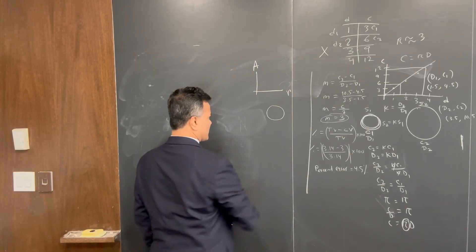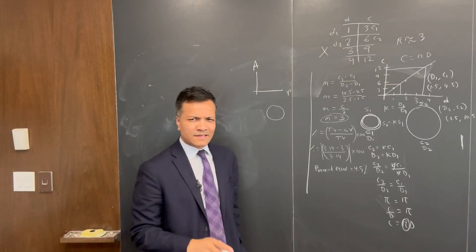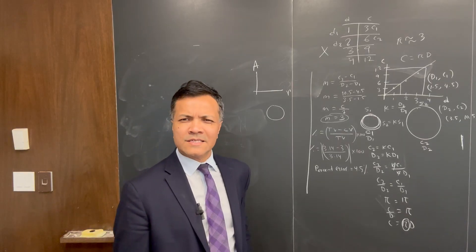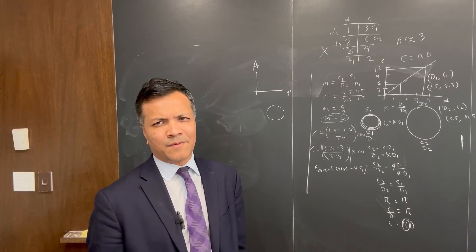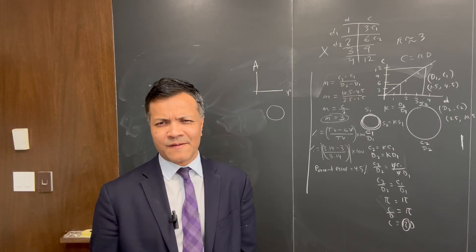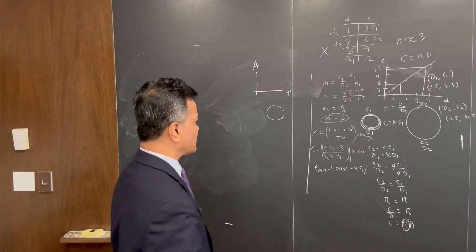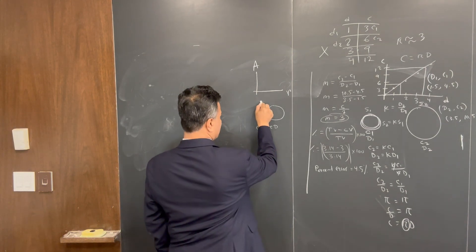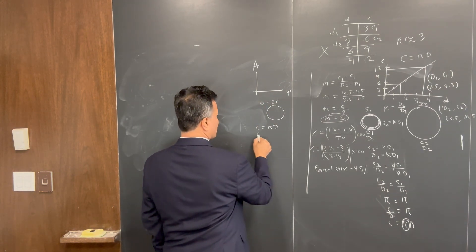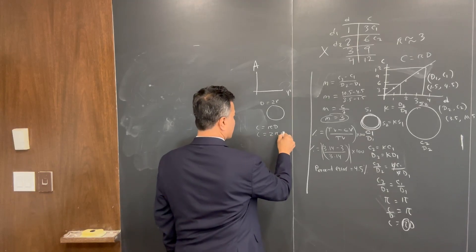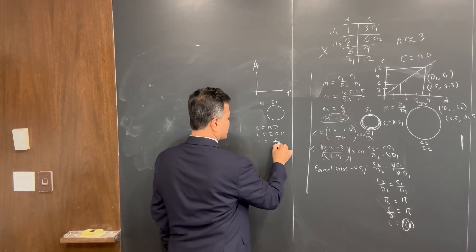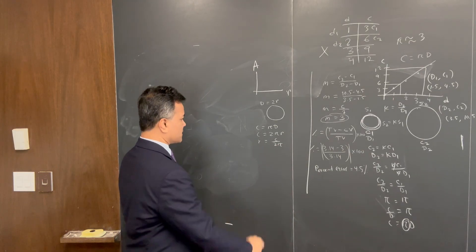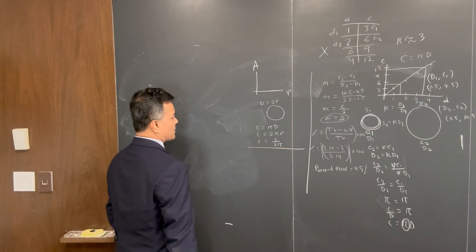We're going to go to area versus radius. You not only need to understand the relationship between circumference and diameter — you also need to understand the relationship between area and radius. We discovered C equals π·d, and we know diameter equals 2r, so C equals 2πr, meaning r equals C over 2π. That's going to help us in a moment.